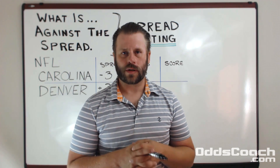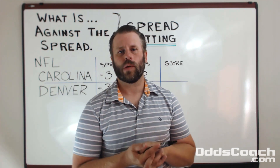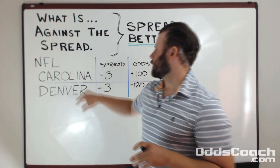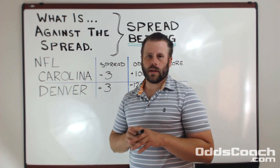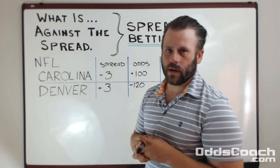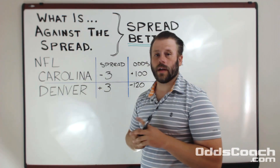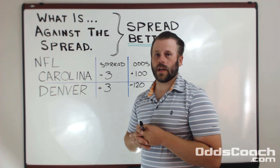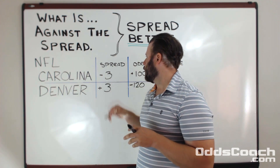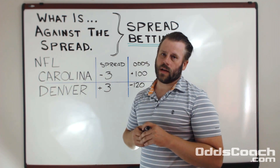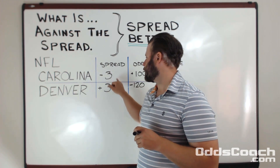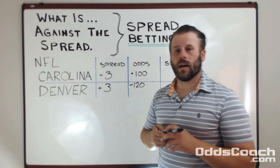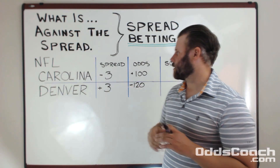Now the best way to illustrate this is to work through a few examples so that you understand how spread betting works. Let's take this NFL game scheduled to be played in September between Carolina and Denver. The odds and spreads have been released for this already, so we can see that the spread for this game has been released at minus three, plus three — minus three for Carolina and plus three for Denver.